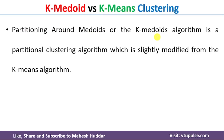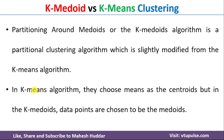Partitioning Around Medoids, or K-Medoid algorithm, is a partitional clustering algorithm which is slightly modified from K-Means. In K-Means, whenever we create clusters, we calculate the means of the data points in the cluster as the centroid. But in K-Medoid, the data points themselves are chosen to be the Medoids. I have already discussed K-Means clustering with many solved examples — links are in the description below.